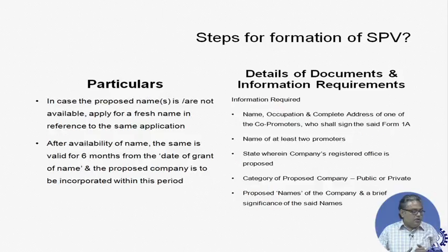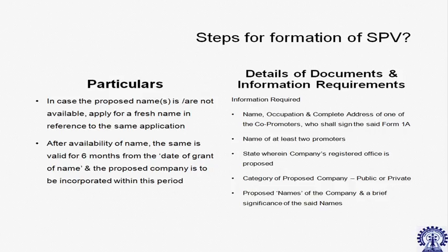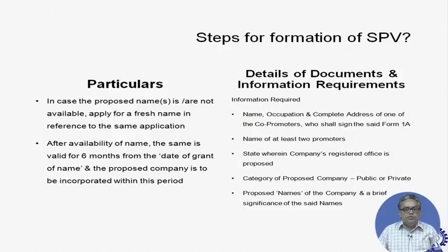The information required to provide includes the name, occupation, and complete address of the co-promoters, who are generally the joint venture partners or sponsors. One of them needs to sign Form 1A, which is used for applying for the name of the company. You need the names of at least two promoters if it is a private limited company and seven in the case of a public limited company. Promoters are those people who are going to subscribe to the Memorandum of Association and Articles of Association.